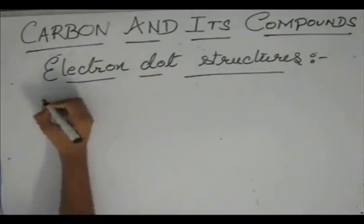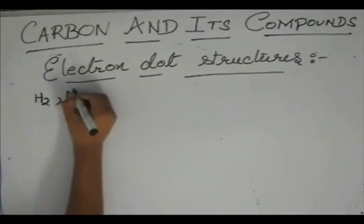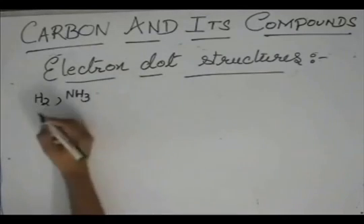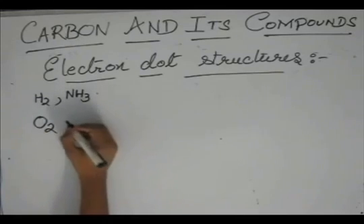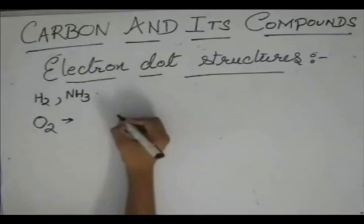Let us start with, we have already learnt about H2 and NH3. So, let us take a structure of oxygen. In O2 molecule, we have two oxygen atoms.